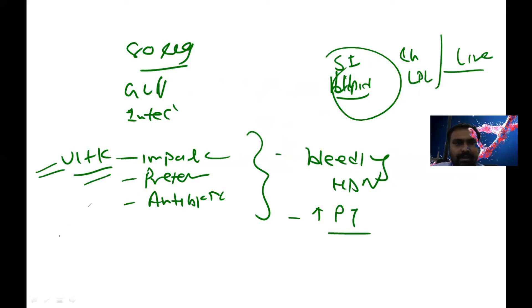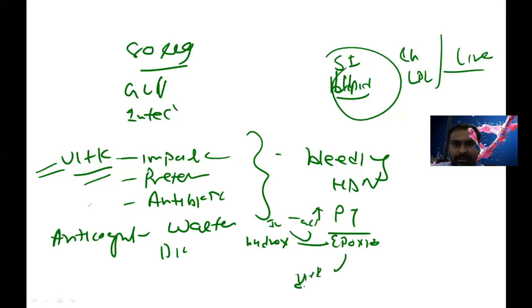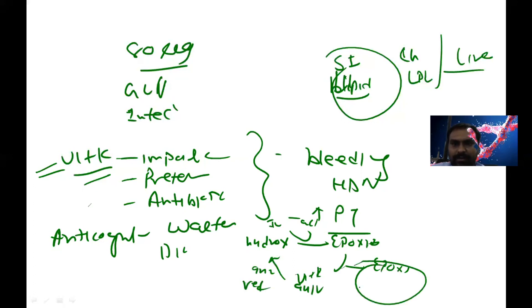This is about the anticoagulant action of warfarin and dicoumarol. It inhibits the epoxide reductase enzyme: the hydroquinone form is converted to epoxide, which converts inactive clotting factors to active form. This epoxide is converted to vitamin K quinone by the epoxide reductase enzyme, and then to hydroquinone by the quinone reductase enzyme. The epoxide reductase enzyme is inhibited by these drugs, which is helpful in dissolving thrombosis or clots.